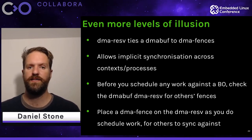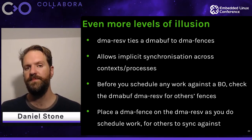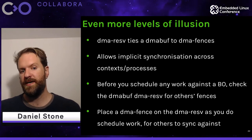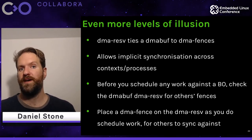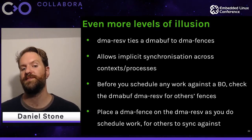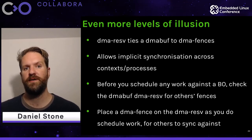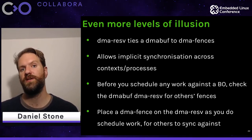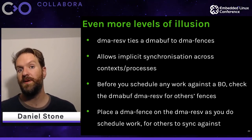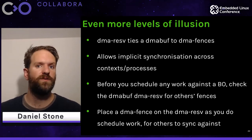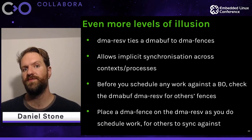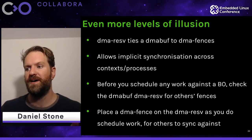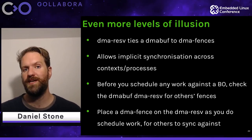DMA-BUF and DMA fences are closely related — not just in the confusing choice of DMA name, since they don't always imply DMA. Every DMA-BUF has a DMA resv, or reservation structure. The DMA reservation ties a DMA-BUF to a set of DMA fences, which allows us to extend the implicit synchronization we already have within the same context across different contexts and processes. When a kernel subsystem receives a DMA-BUF, it's responsible for checking the reservation before scheduling any work against that buffer to see what others have already queued. Similarly, when queuing work, you need to place a reservation to tell others to synchronize against. This extends the whole FIFO concept not only across GPUs but across entire devices.